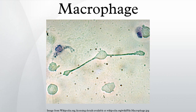Fixed macrophages remain at strategic locations such as the liver, neural tissue, bone, spine and connective tissue, ingesting foreign materials such as pathogens and recruiting additional macrophages if needed. When a macrophage ingests a pathogen, the pathogen becomes trapped in a phagosome, which then fuses with a lysosome. Within the phagolysosome, enzymes and toxic peroxides digest the pathogen.